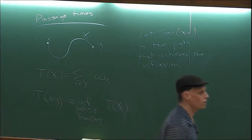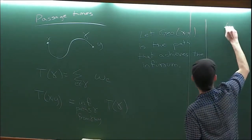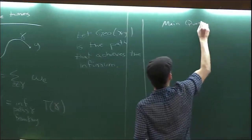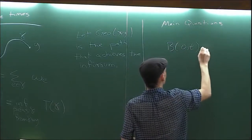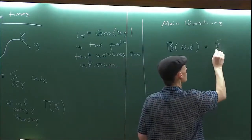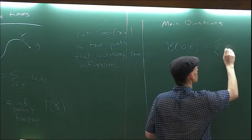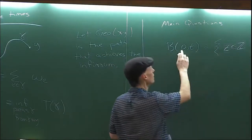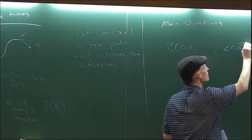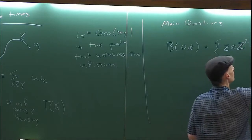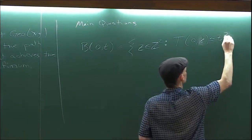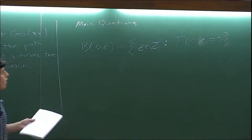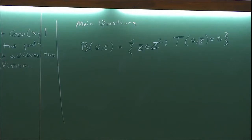So now what are the main questions? What would we really like to know? I can ask: what points can I reach within a given amount of time? The ball B(0,t) centered at zero with time t is all the points z in Z² such that the time it takes to get from zero to z is less than or equal to t. I want to know how this grows as t gets large.